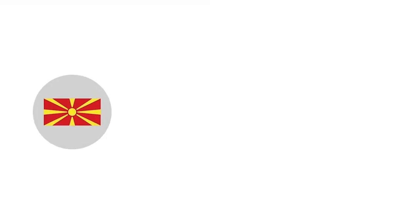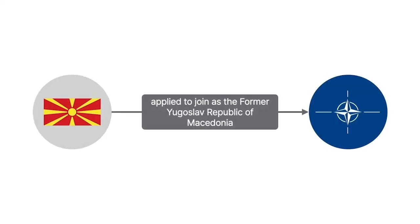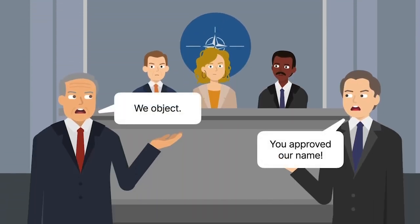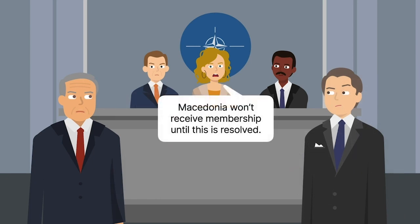In 2008, Macedonia applied to join the North Atlantic Treaty Organization, or NATO, as the Former Yugoslav Republic of Macedonia. However, Greece objected due to Macedonia's name, even though Macedonia was attempting to join under the name Greece had previously agreed to in the interim accord. NATO held that Macedonia wouldn't receive an offer for membership until its name issue was resolved.